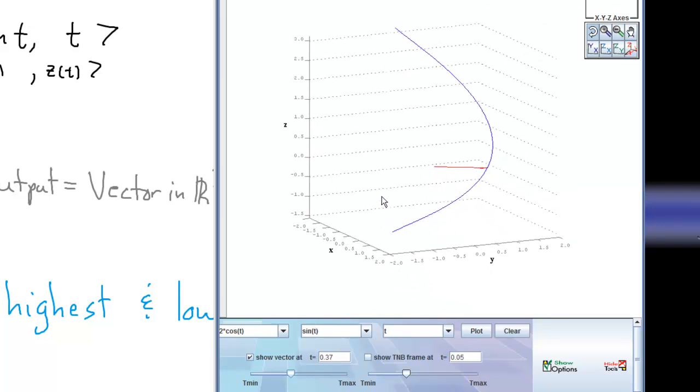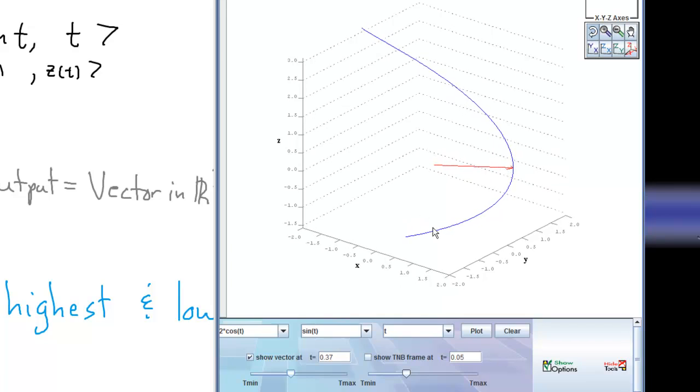And you can see that in the graph that we've plotted using MVT. And you can see that little red vector as we go from negative pi over 2 all the way up to pi.